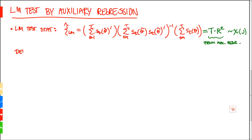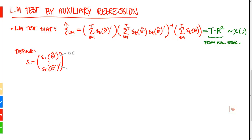So first define the following matrices and vectors. Let S be the stacked individual scores — s₁(θ̃) all the way to s_T(θ̃) — and note that each of these, with primes, is a 1×k row vector. We have T of those, so S is going to be T×k. Second, define i as just a vector of ones with dimension T×1.